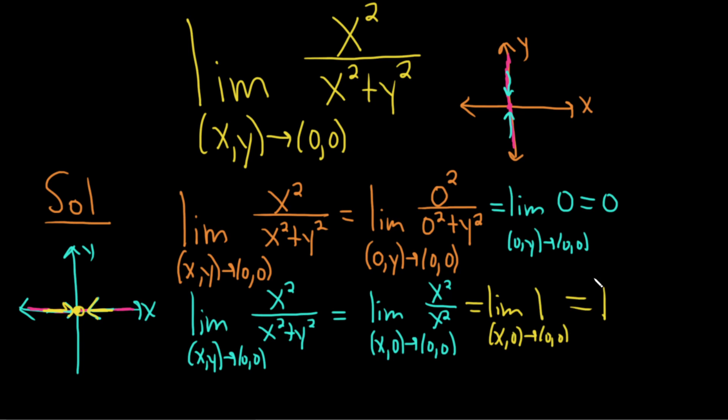And so because these limits are different, the answer is DNE, does not exist. In order for the limit to exist, it must be the same no matter which direction we approach. So again, the answer here is the limit does not exist.